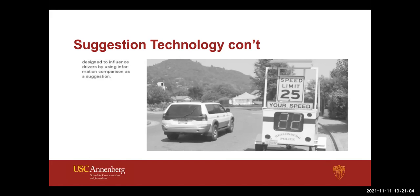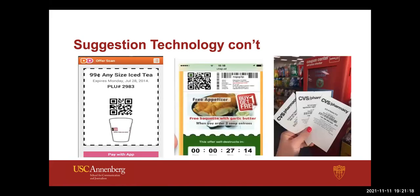Suggestion technology is about timing — that's the difference between tailoring technology, which is giving folks customization, and suggestion technology, which is timing, timing, timing. No coupon is forever — there's always a time limit. They want that to be a timely suggestion of a purchase, and they give you a discount based on that timely suggestion.